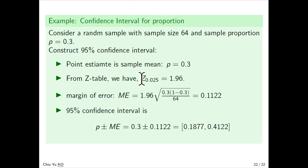The example: consider a random sample with sample size 64 and sample proportion 0.3. Construct a 95% confidence interval. The point estimate is the sample proportion 0.3, and from the z-table, z of 0.025 is 1.96.